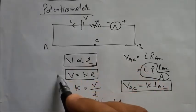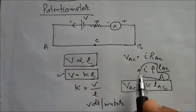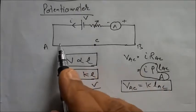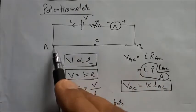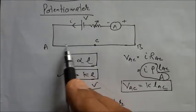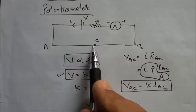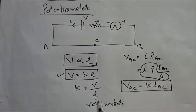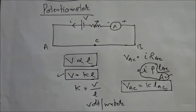This is the main circuit and its principle: for constant current flowing through a wire, the potential difference between two points is proportional to the distance between those two points, provided constant current is there and the wire has uniform cross-sectional area. This is the principle of potentiometer.